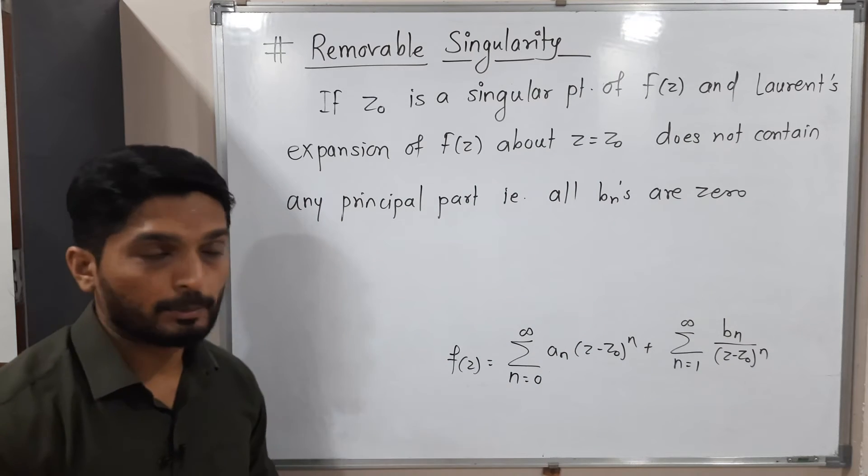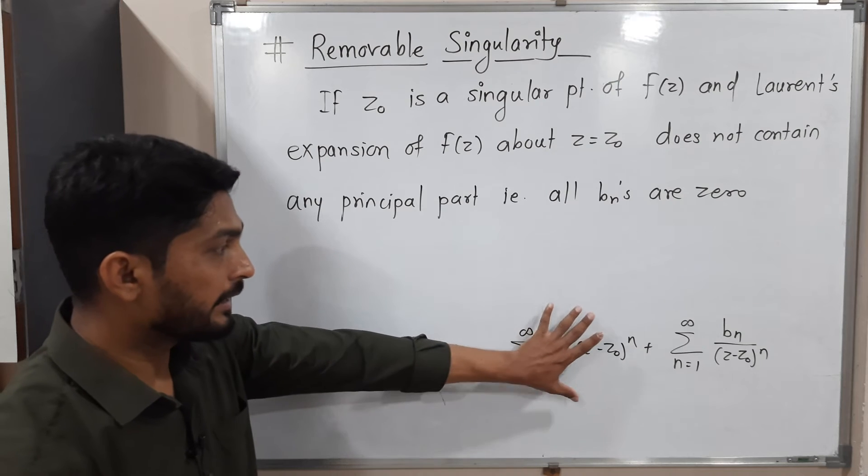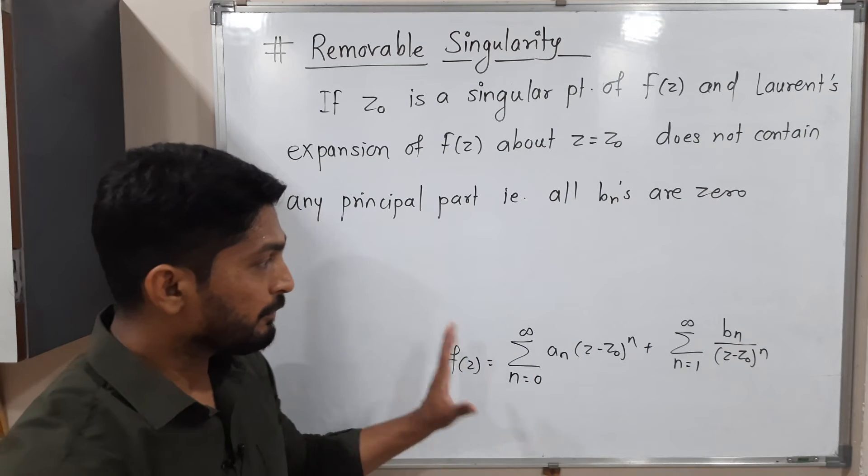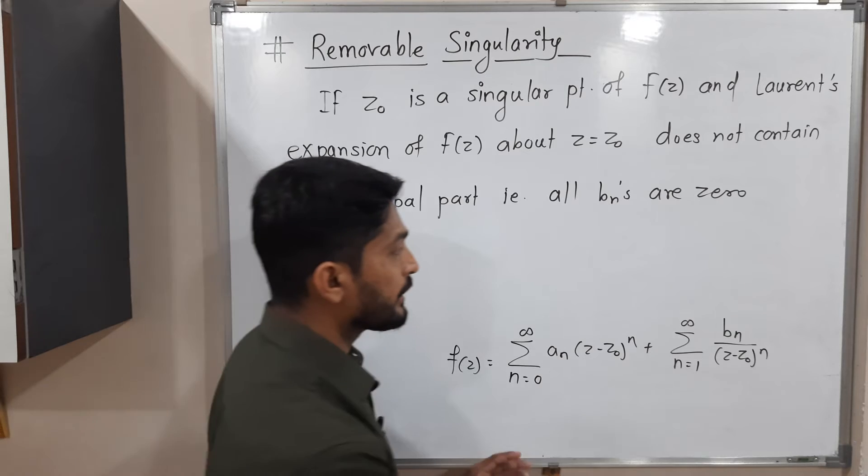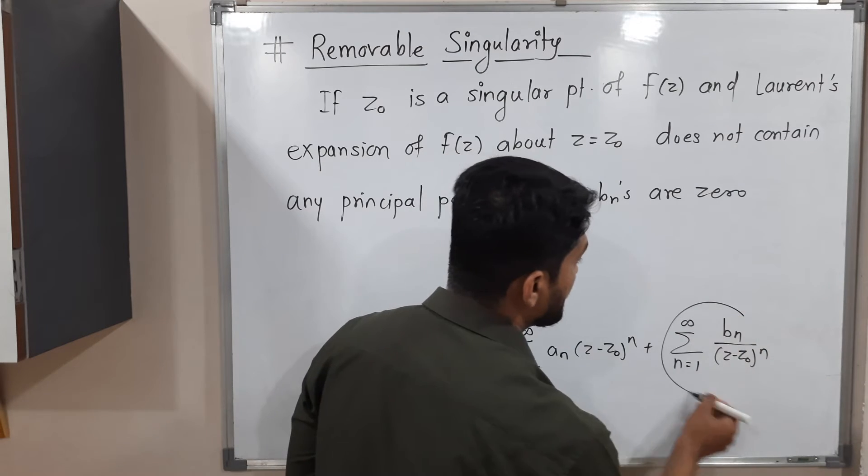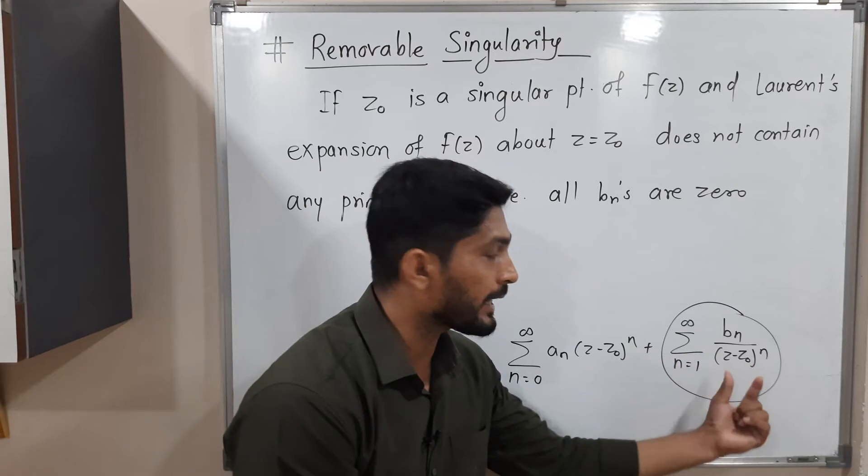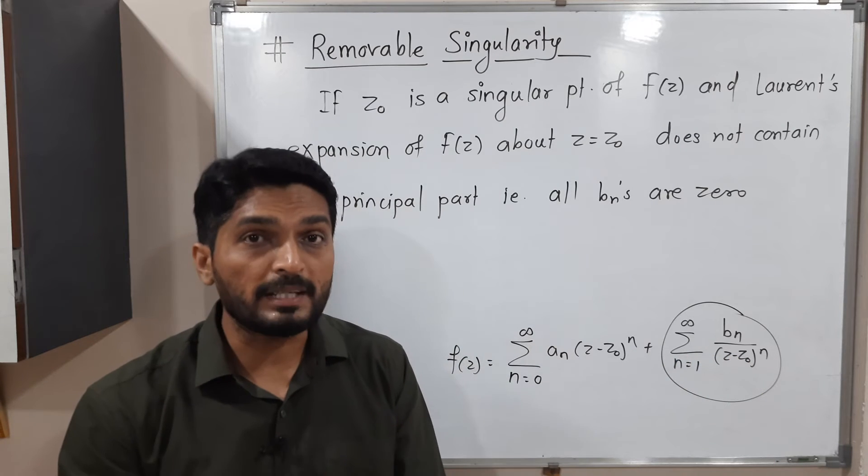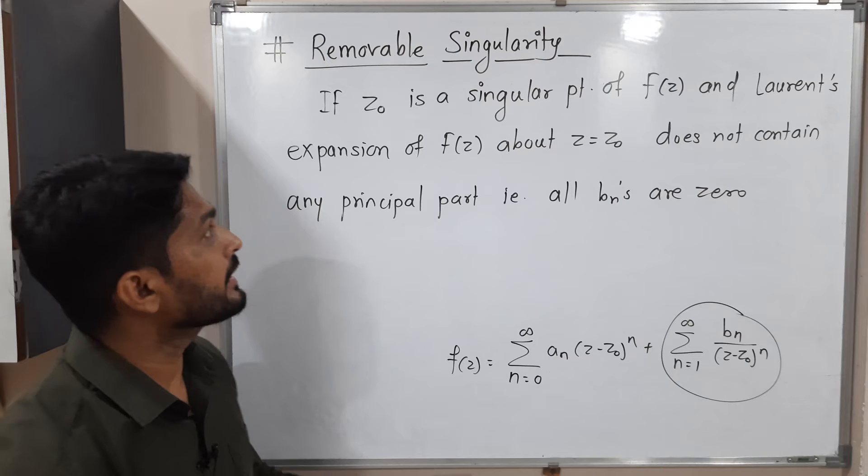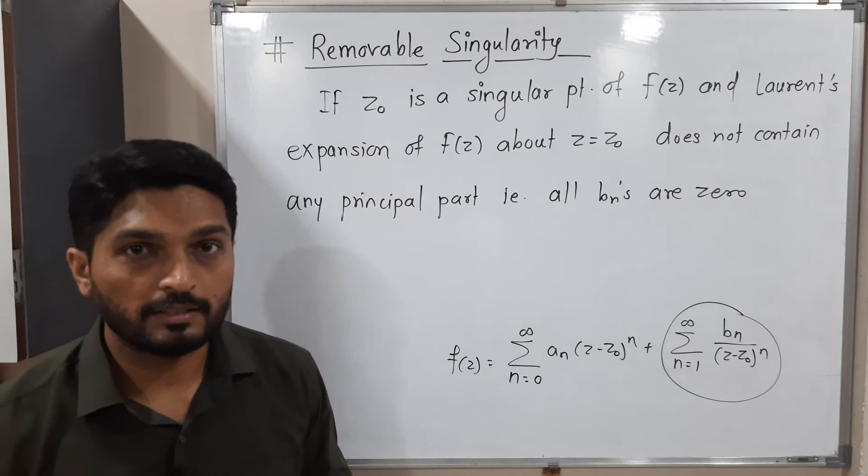So this is actually a Laurent expansion. This is analytic part, this is principal part. But if you find a Laurent expansion and if you get the principal part is 0, no any term in the principal part, that means there is no any bracket in denominator, all bn's are 0, then we say it is a removable singularity.